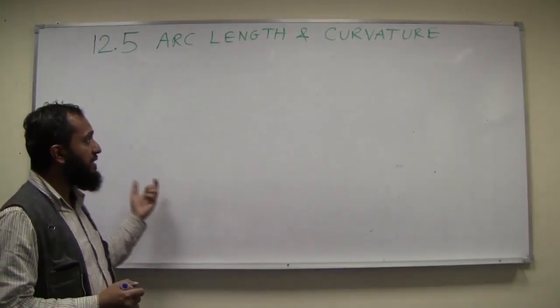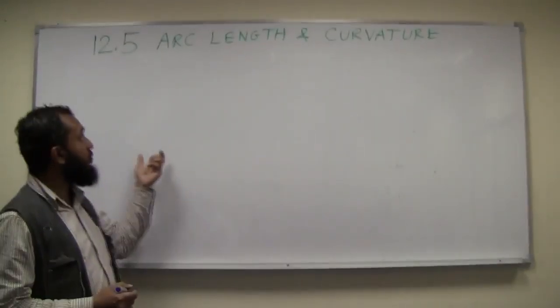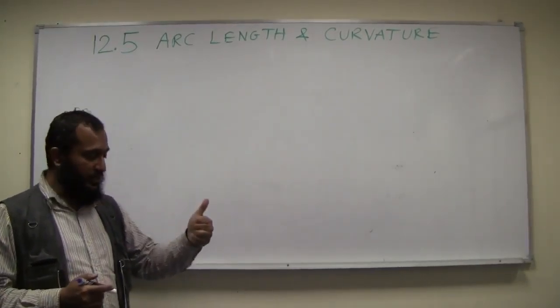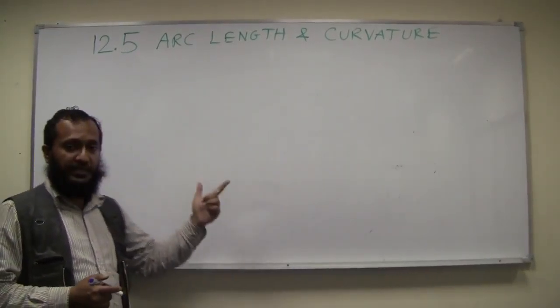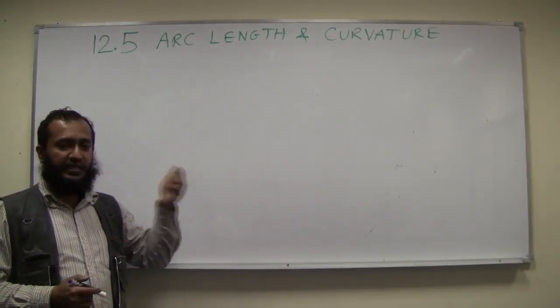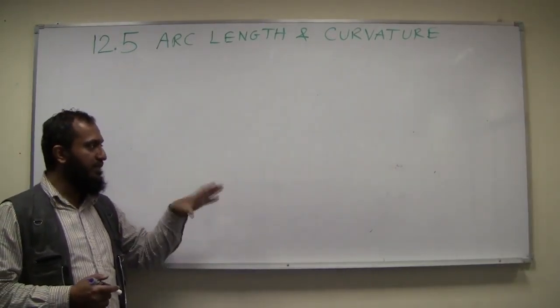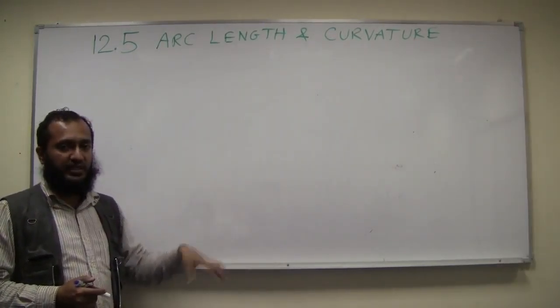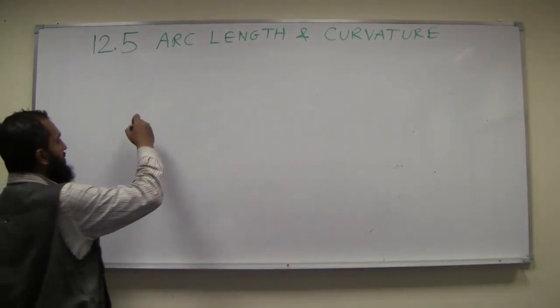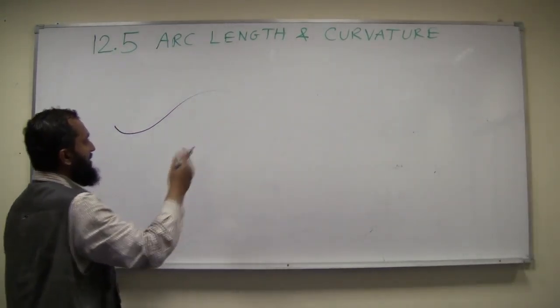In the last lecture we saw the formula for arc length calculation given a parameterization and did one example. In this short lecture we'll look at two things: the intuitive reasoning behind the formula. We're not going to go into a very detailed proof because the intuitive reasoning is enough. So imagine this is your curve, let's imagine it in 2D.